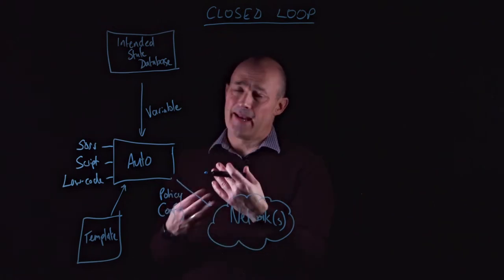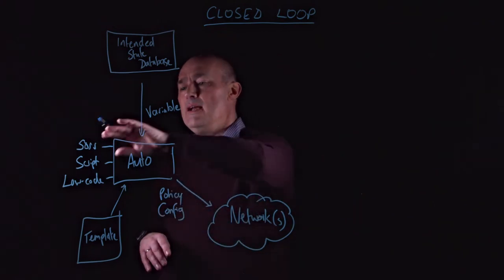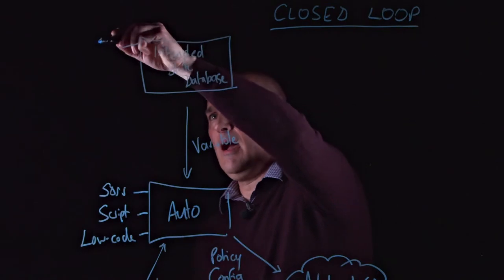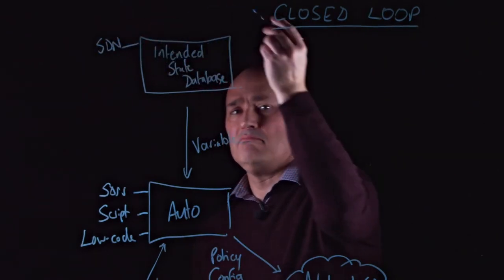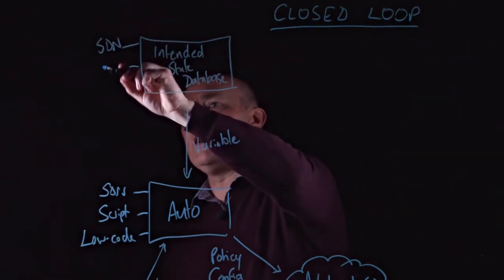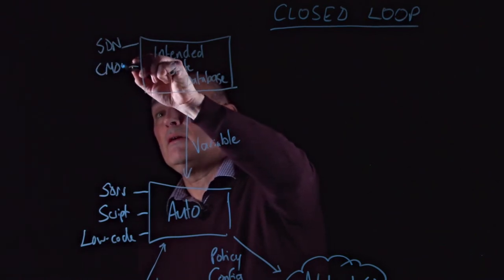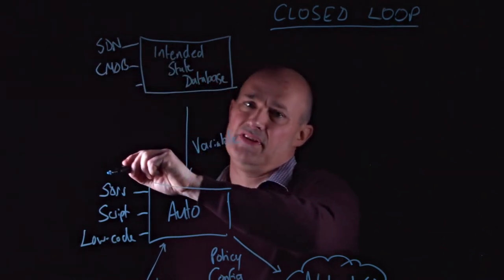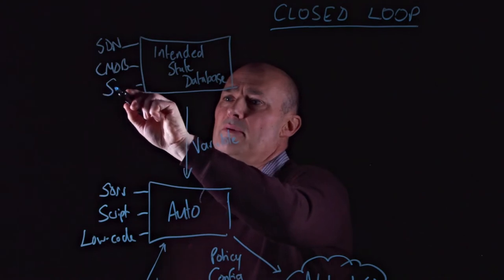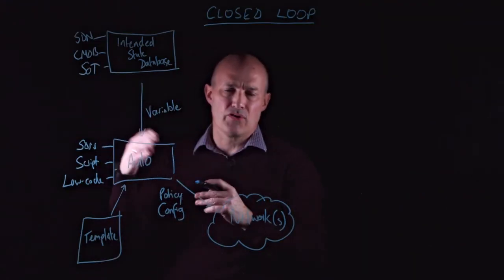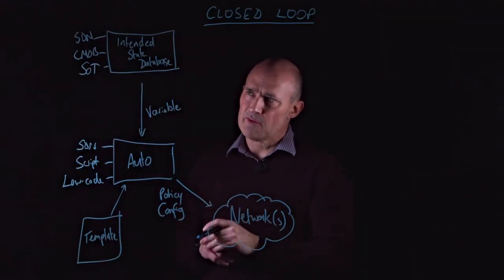It holds the values which then your automation platform will use in the templates to render that configuration into the network. Now that intended state database, again, can take a number of different forms. It might also be part of your SDN platform, but it might be a CMDB, or specifically a source of truth database. Something like a netbox or an autobot, for example.